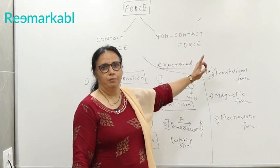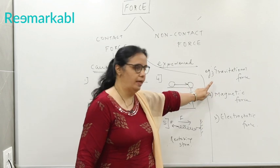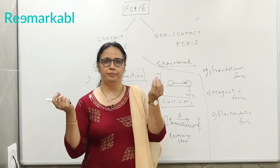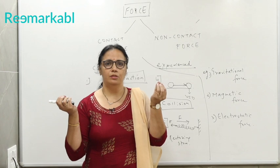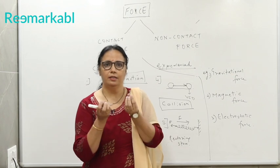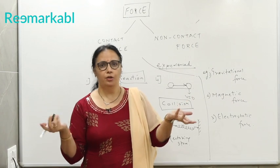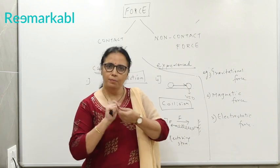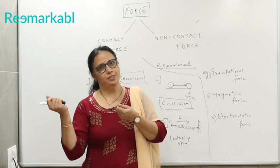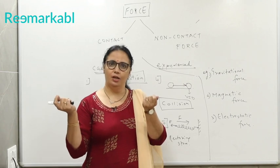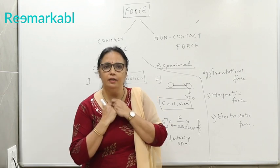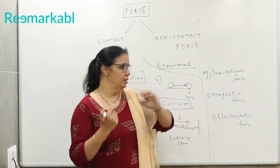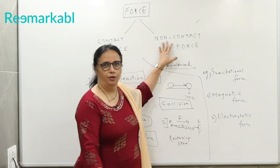Similarly, two magnets. What happens? Unlike poles, they attract. Like poles, they repel. Non-contact force. Or electrostatic force. Upon rubbing of two objects, one becomes positively charged, the other becomes negatively charged and then they attract. What kind of force is that? Electrostatic. So this too is a non-contact force.